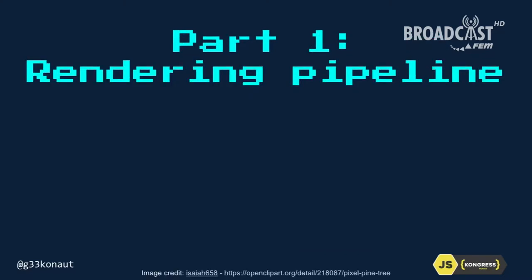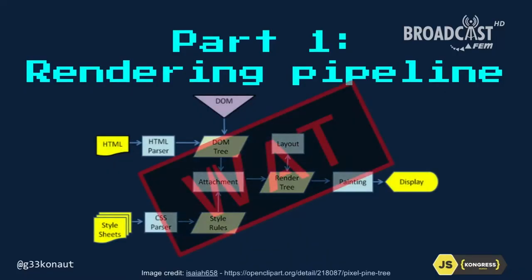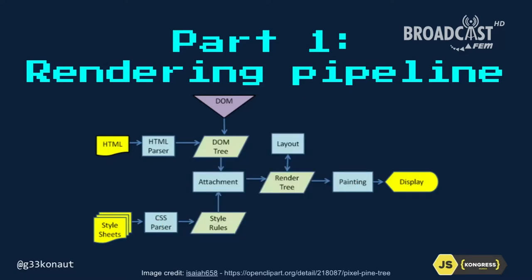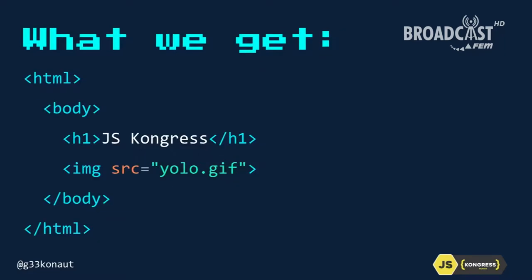Let's talk about the rendering pipeline. The rendering pipeline is super simple — not. Instead of looking at that complex diagram and being confused, we're going to walk through it. So let's say we start with a website. This is how a website looks when it reaches our browser: it comes in over the network as text and image, and maybe there's some CSS somewhere else.